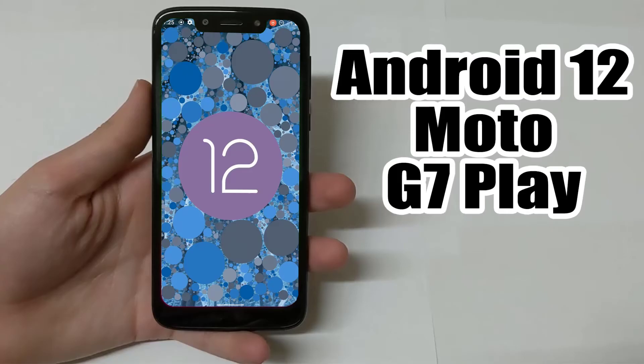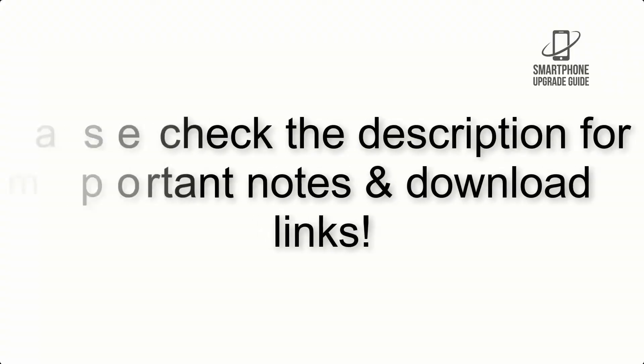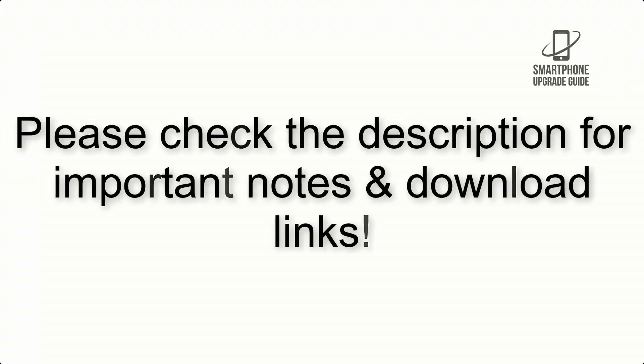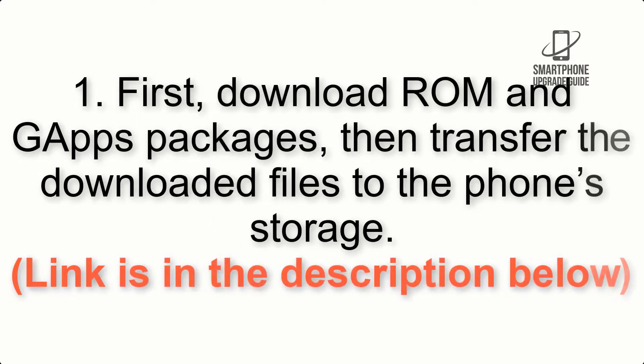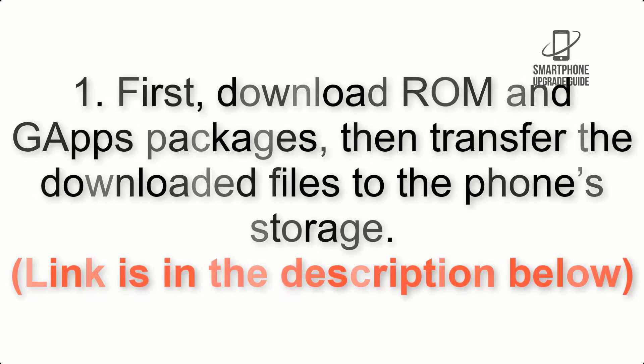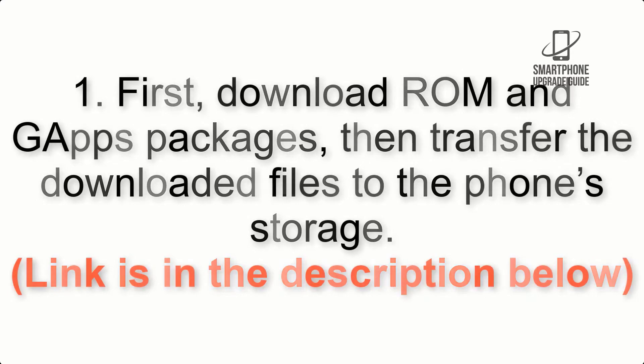Install Android 12 on Moto G7 Play via Lineage OS 19.1. Please check the description for important notes and all the download links. First, download the ROM and GApps packages, then transfer the downloaded files to the phone storage. The link is in the description below.